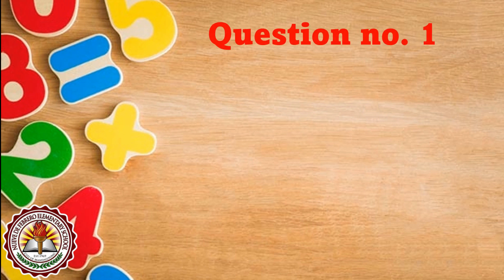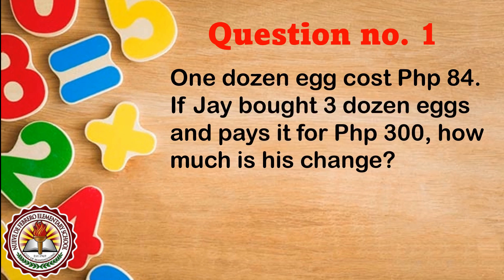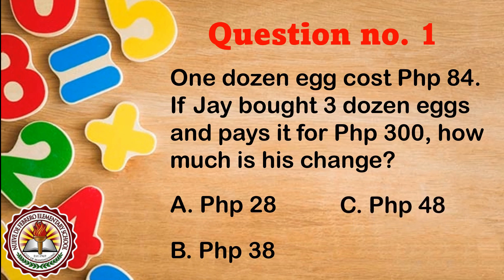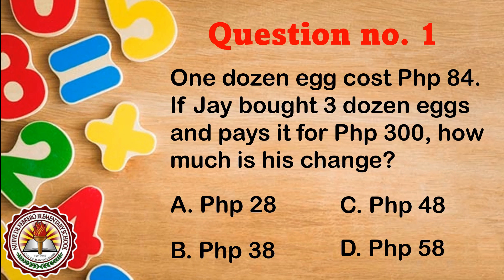Now let us answer these questions. Question number 1: One dozen eggs costs 84 pesos. If Jay bought 3 dozen eggs and paid 300 pesos, how much is his change? Is it A) 28 pesos, B) 38 pesos, C) 48 pesos, or D) 58 pesos? The answer is letter C, 48 pesos.